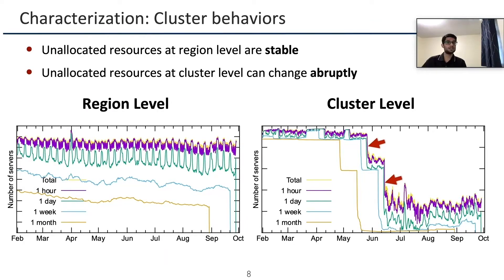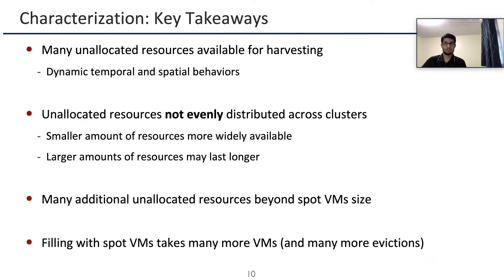Each region in Azure can have many clusters, and these clusters within the same region can behave differently. We plot servers that could host a one-core spot VM in a popular region on the left and within a cluster of that region on the right. Clearly, the amount of unallocated resources can vary abruptly at the cluster level as shown by the red arrows, whereas at the region level they are far more stable and don't show any abrupt changes.